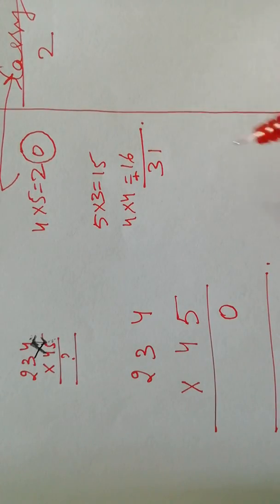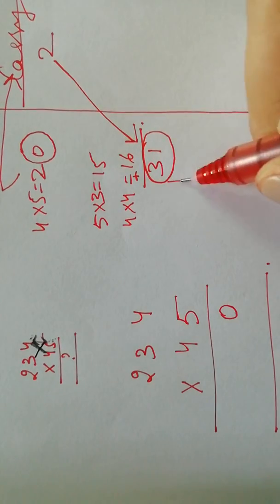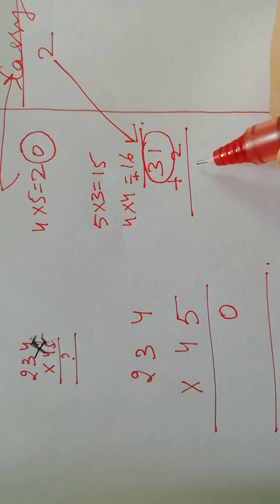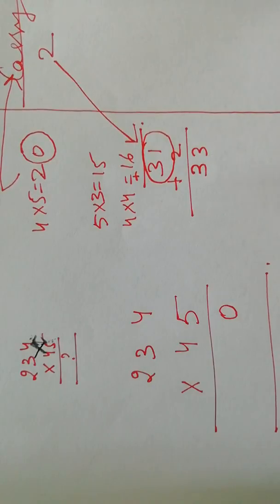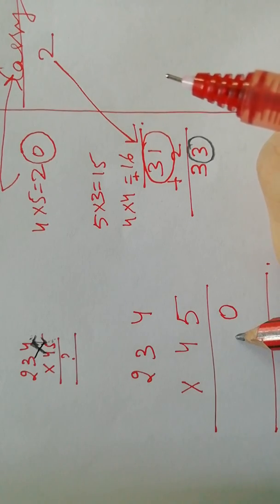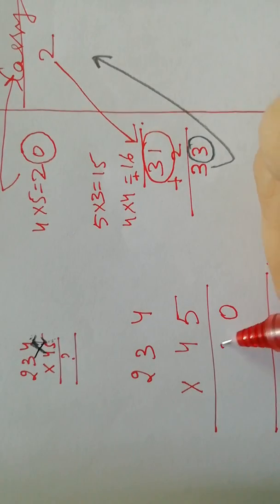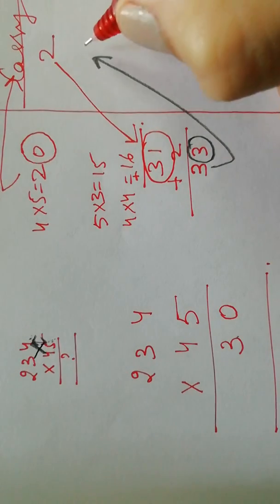Now whatever the result is, I will add this carry to this number. In this case now I get 33. So the units place will come here and the tens place will go to the carry column. So the units place is 3 here, it will come here, and the tens place will go to the carry column.